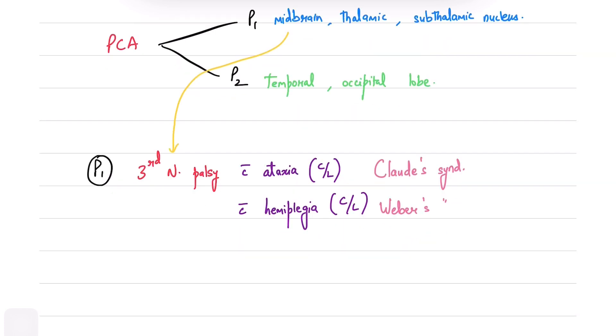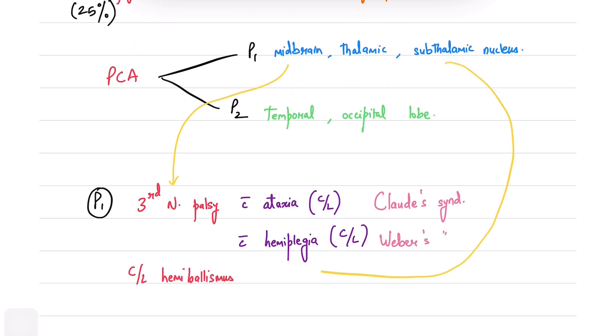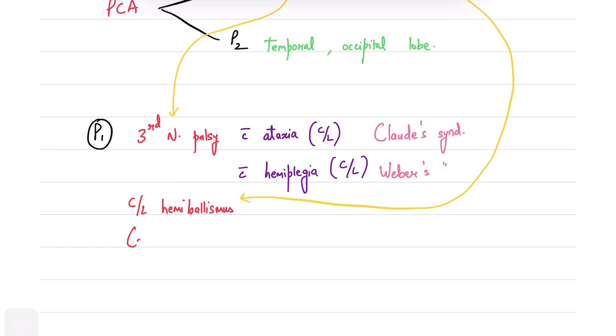Involvement of the subthalamic nucleus will present as contralateral hemiballismus. Extensive infarction of the midbrain and subthalamus will present as coma, unreactive pupils, and decerebrate rigidity.